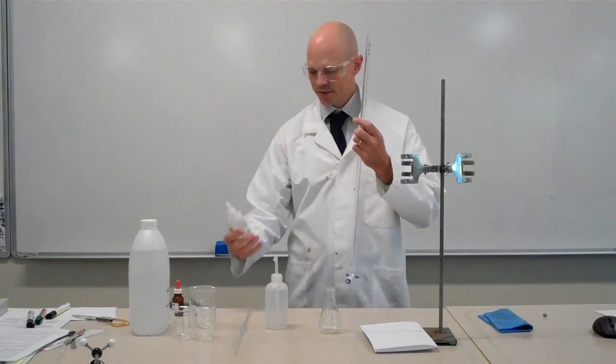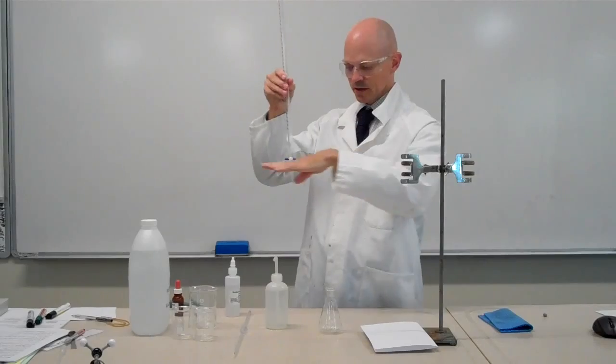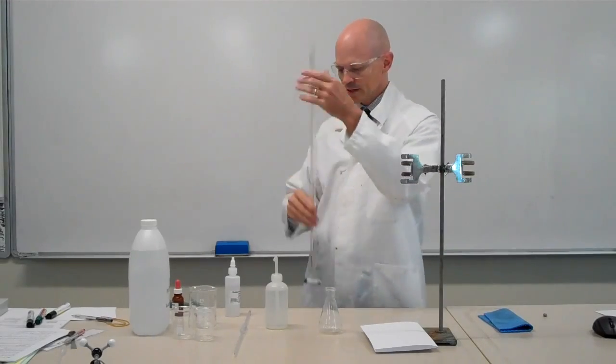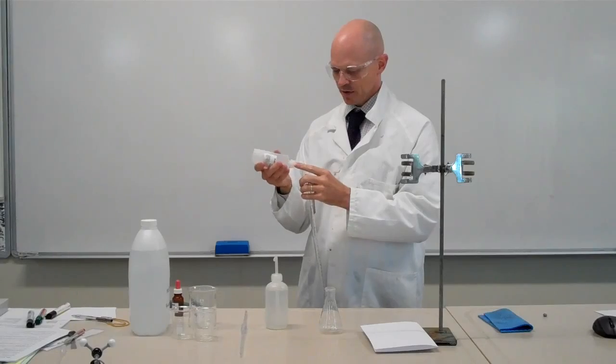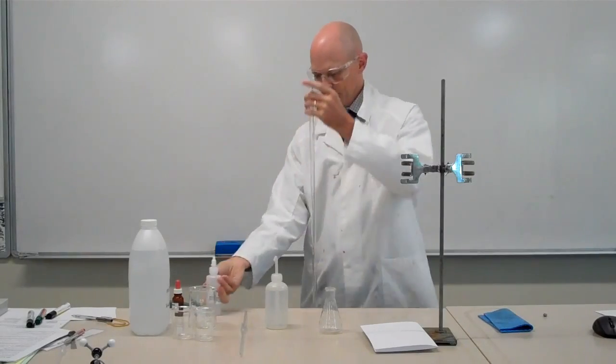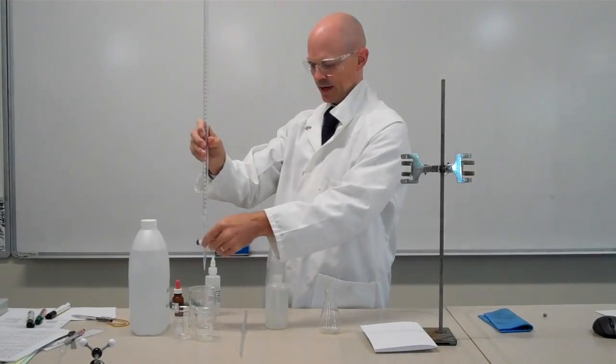The first thing we need to do is wash out our burette. The tap needs to be closed, which means it's going to cross the flow of the fluid through the burette. So I'm just going to add a little bit of sodium hydroxide to my burette and just open the tap, let it drain out.